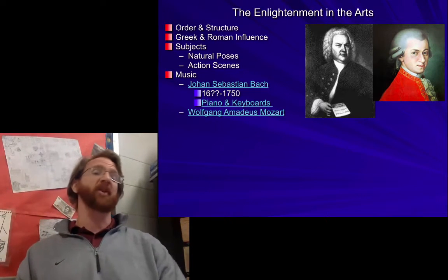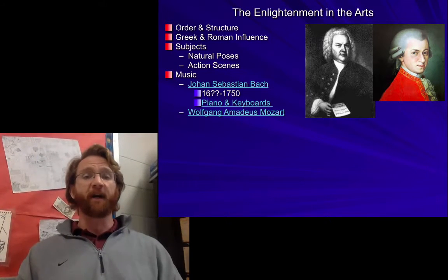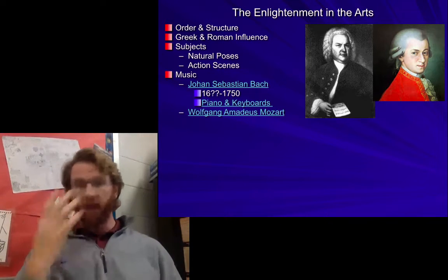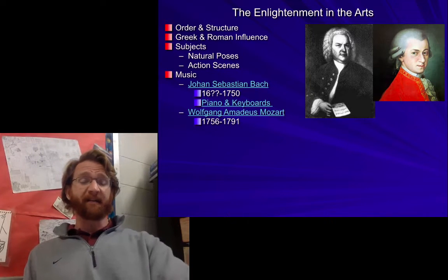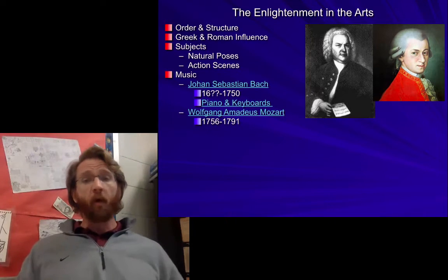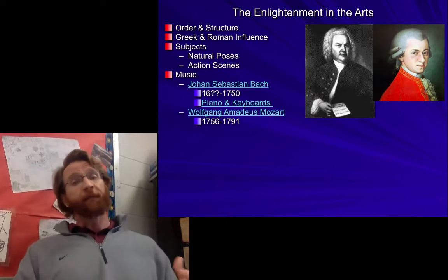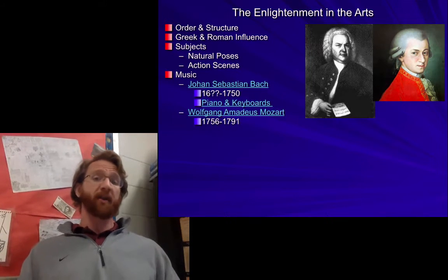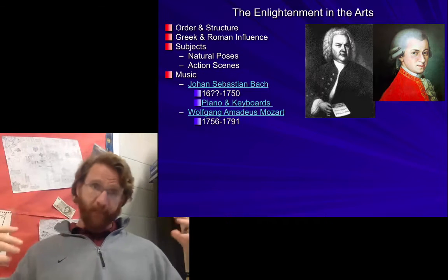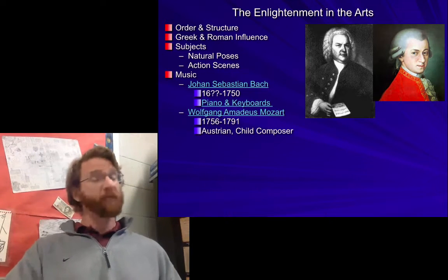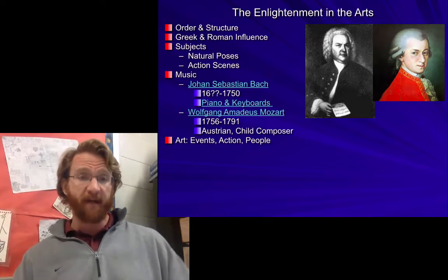Wolfgang Amadeus Mozart was a child prodigy — think of him as kind of like the Justin Bieber of the time period. He lived from 1756 to 1791, wrote music at a very young age, and became really famous because of it. Kings, the Holy Roman Empire, the Austrian kings, the German princes, even the French wanted him to come live at their court and compose works for them. He was originally from Austria.